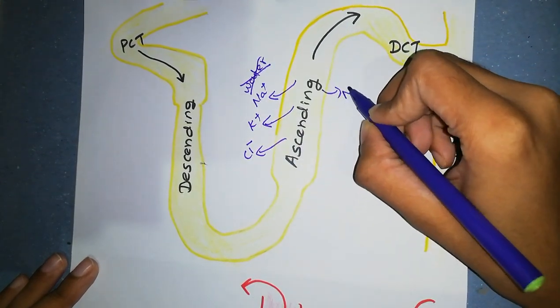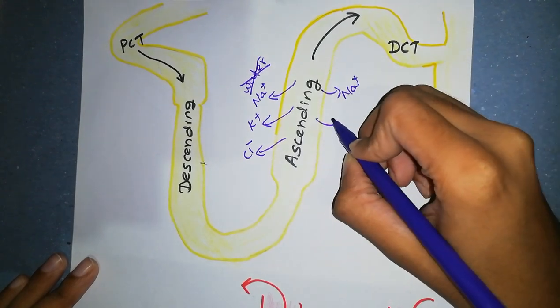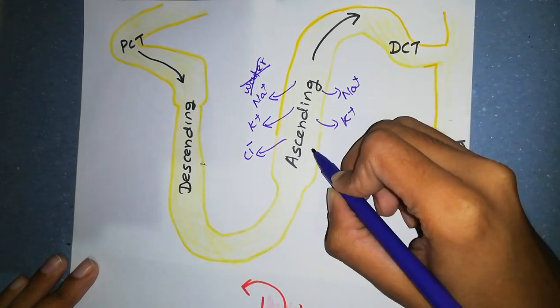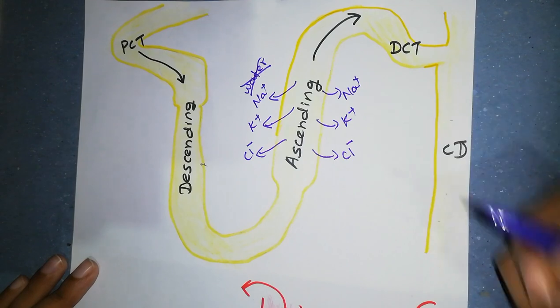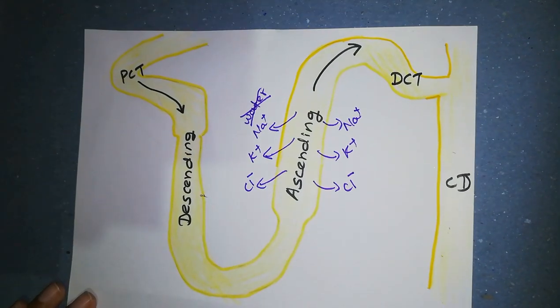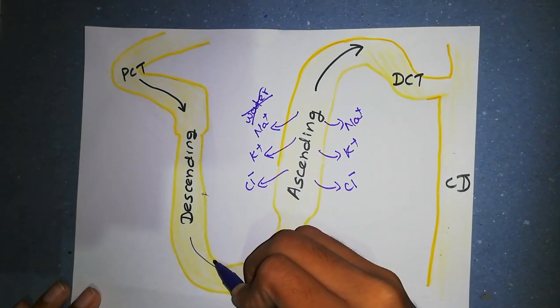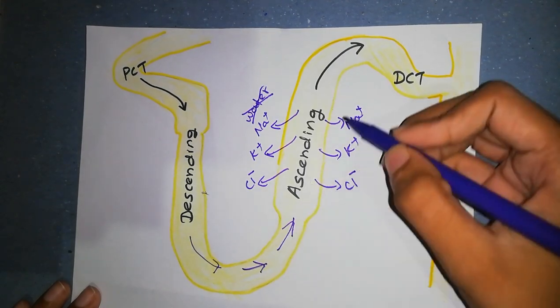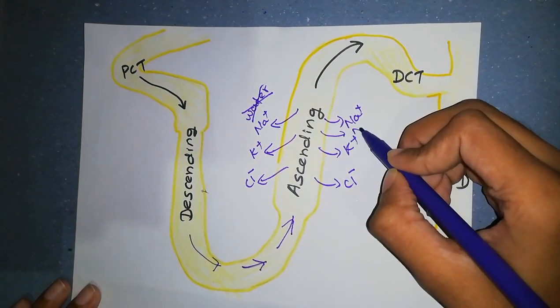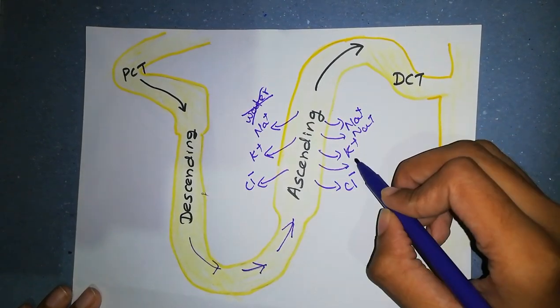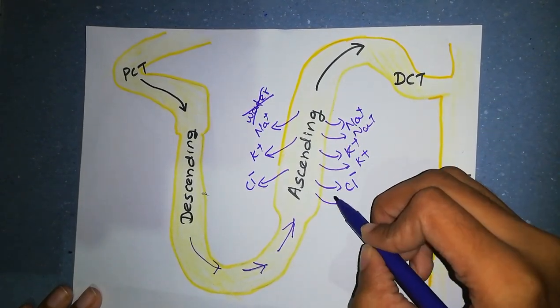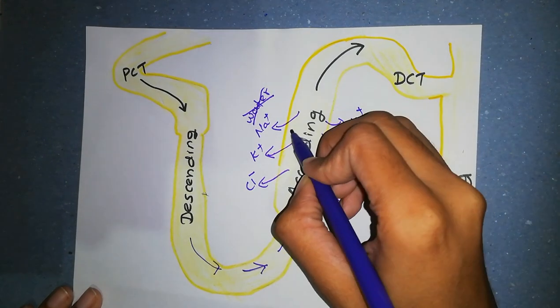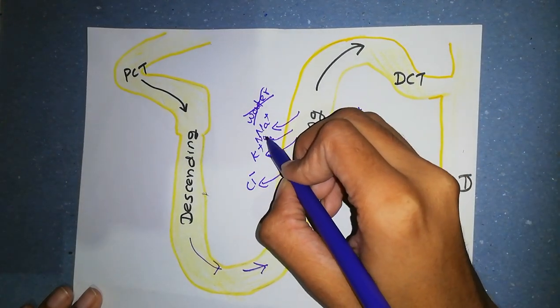These solutes are trapped in medullary because of the counter current exchangers. I'll come to that later. For now, remember that they are trapped. When more and more inflow comes from proximal convoluted tubules into this part of nephron, ions, especially sodium and chloride, are reabsorbed by the transporters in this part and keep adding more and more ions into the interstitium.